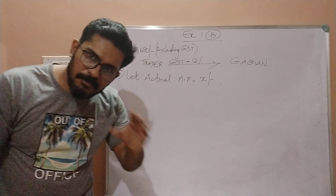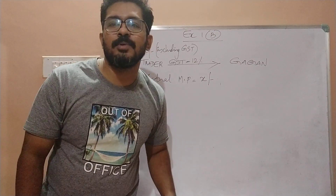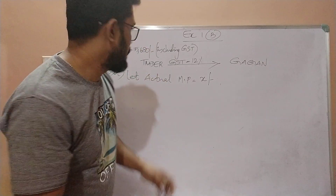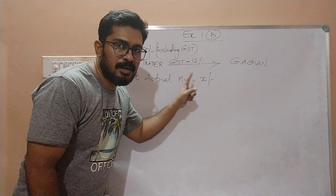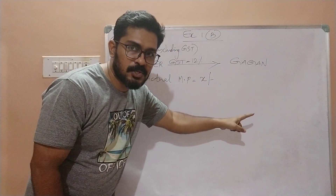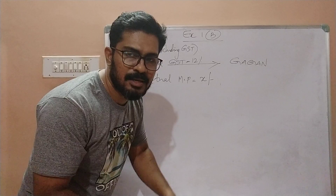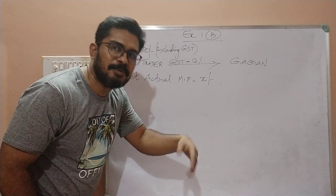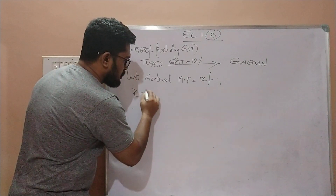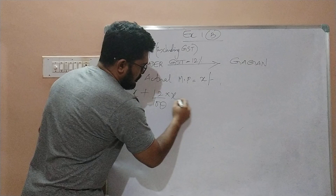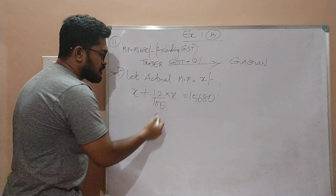So first of all, we will find the actual market price of this refrigerator — half of the problem will be solved right there. I assume that the actual market price is equal to X rupees. On this X rupees, when I add 12% extra GST, I get the value equal to 15,680.